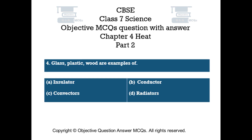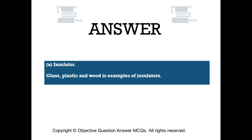Question number 4. Glass, plastic, and wood are examples of — Option A: insulator, Option B: conductor, Option C: convectors, Option D: radiators. The right answer is Option A — Insulator. Glass, plastic, and wood are examples of insulators.